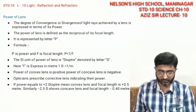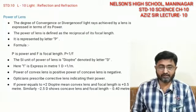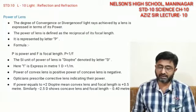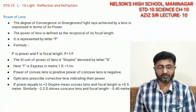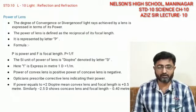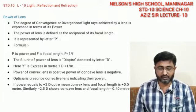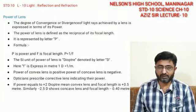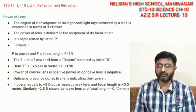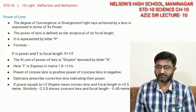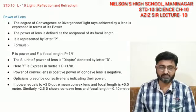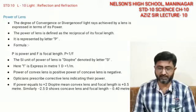Now, the power of a convex lens is always taken as positive, and the power of a concave lens is always taken as negative. So convex lens is positive and concave lens is negative.